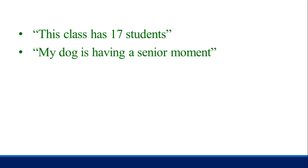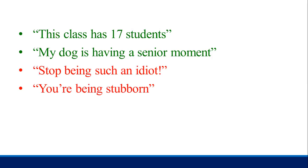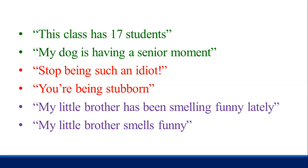Consider these contrasting sentences: 'This class has 17 students' versus 'My dog is having a senior moment.' 'Stop being such an idiot' versus 'You are being stubborn.' 'My little brother smells funny' versus 'My little brother has been smelling funny lately.' As you can see, 'has' is a stative verb while 'is having' is dynamic; 'being' in the first is stative while 'are being' is dynamic; 'smells' is stative while 'has been smelling' is dynamic.